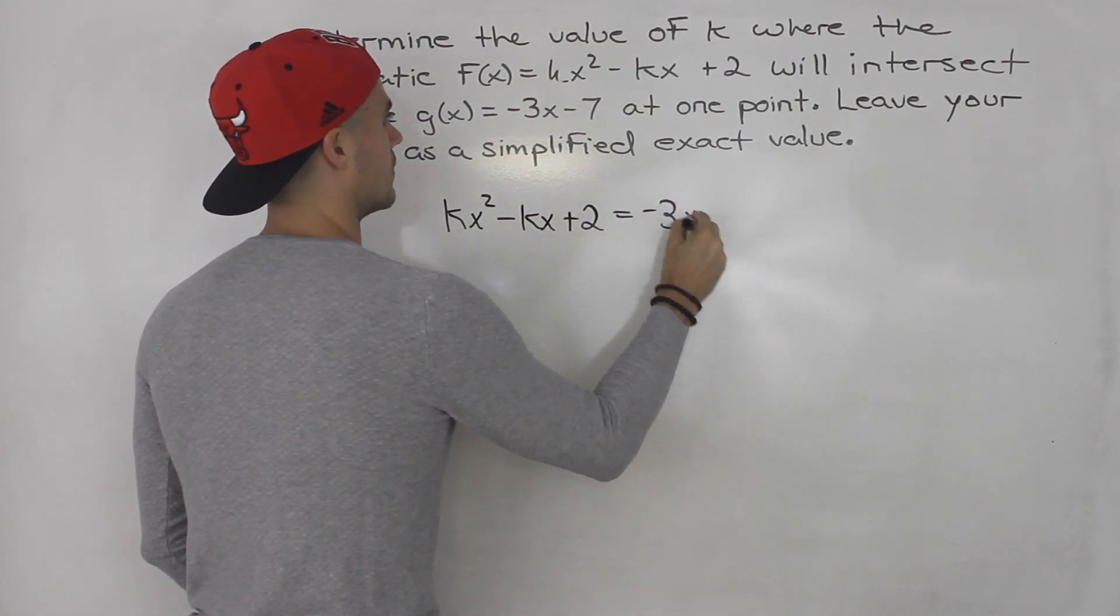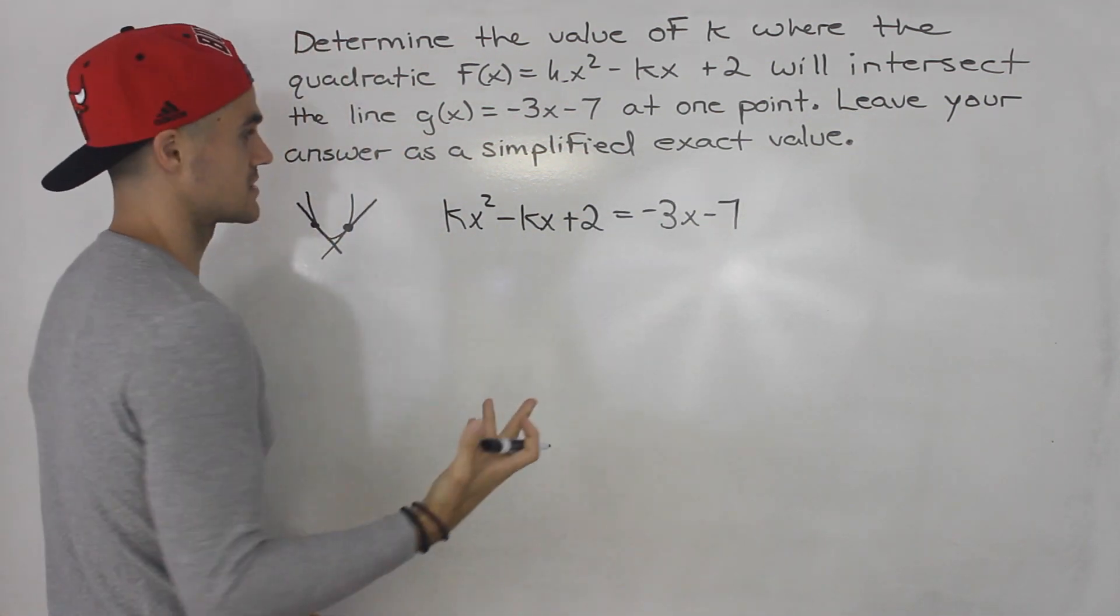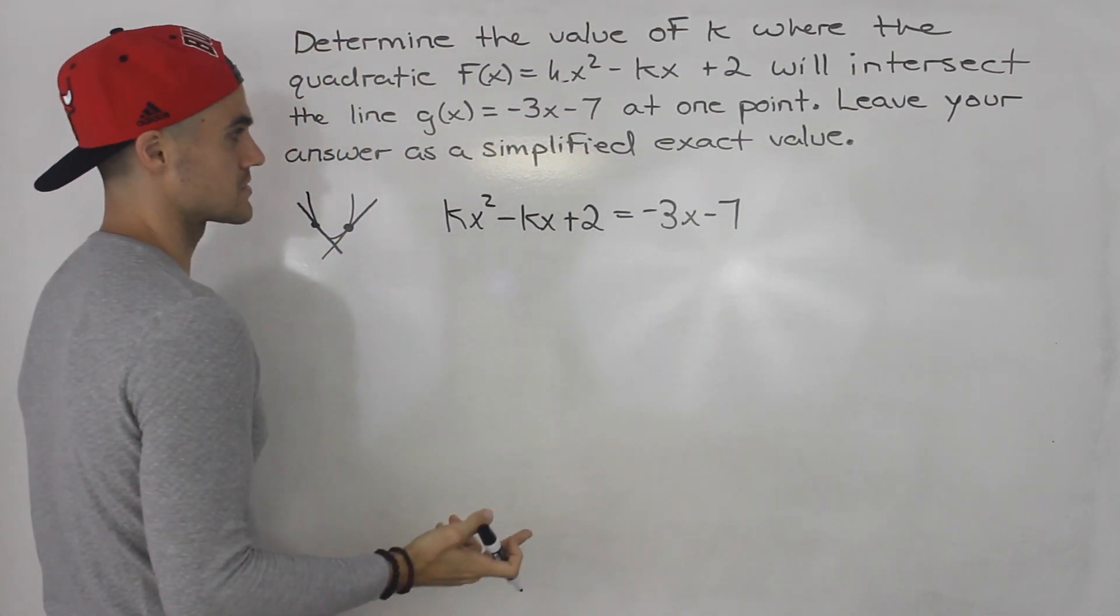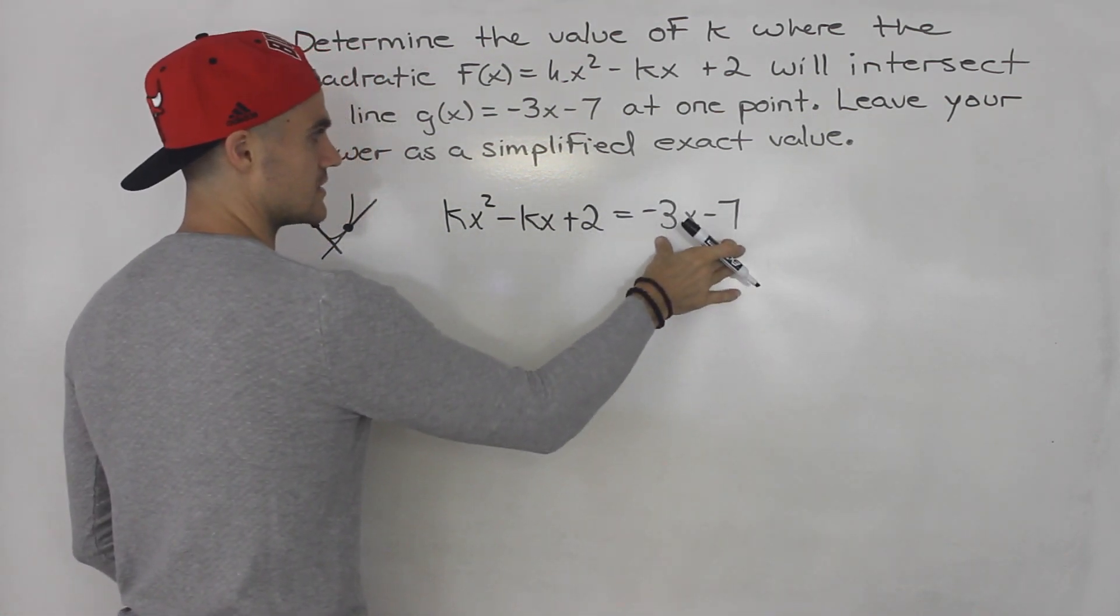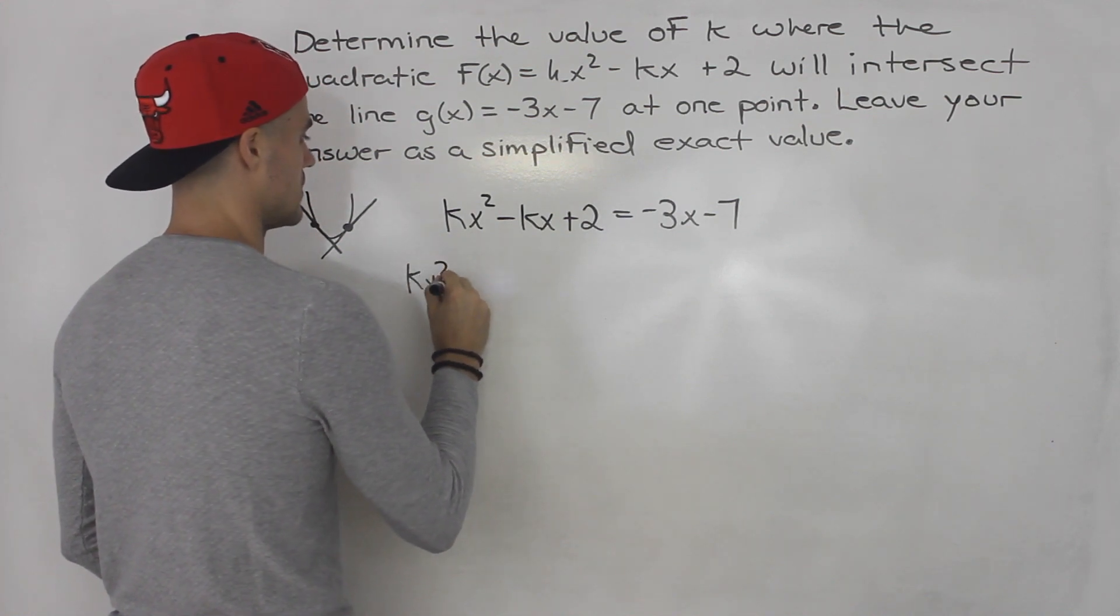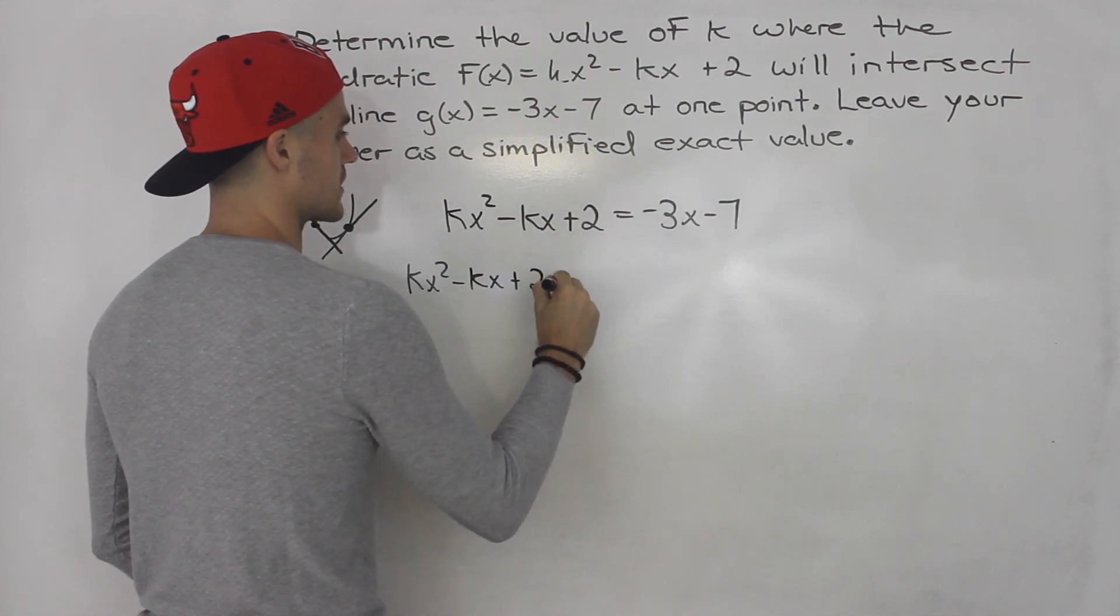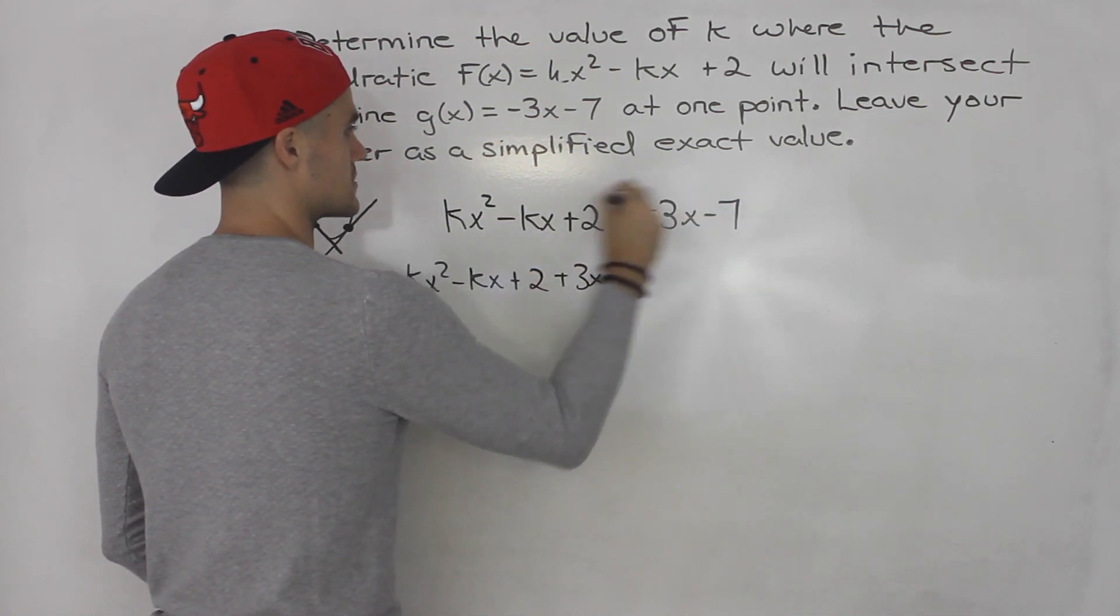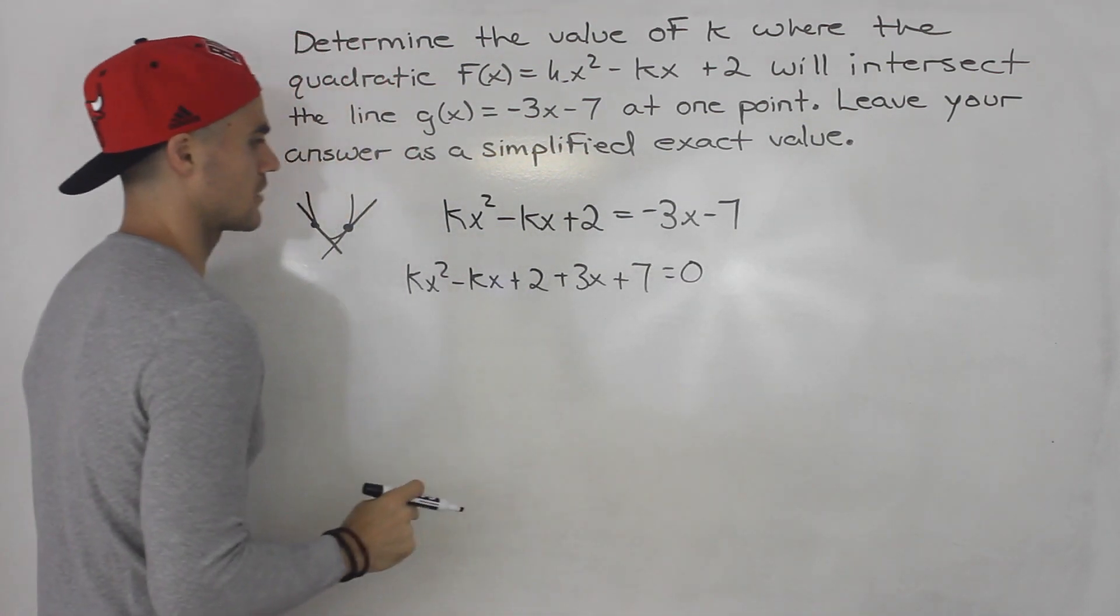We're figuring out where the quadratic and the line are going to intersect, specifically at what x values. And the method is you take everything, bring it over to one side. So we would have kx² minus kx plus 2, bring this over, this becomes plus 3x, this becomes plus 7, and then we'll have zero left on the right side.